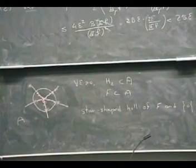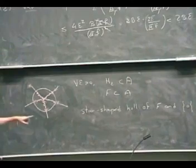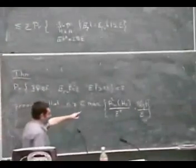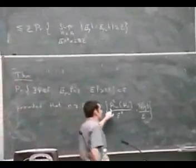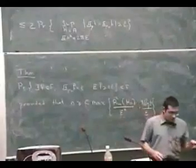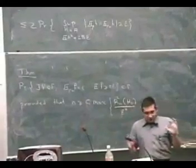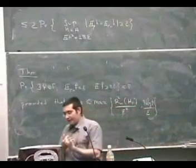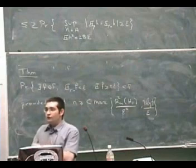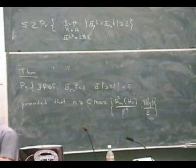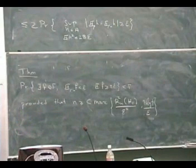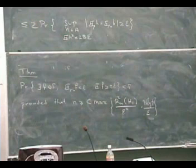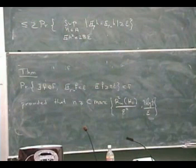What I mean by global data is: assume that you know something about the structure of your original class — assume that you know, for example, it's a class constructed using kernel machines, or assume that you know something about the covering numbers. Can you say something about the Rademacher complexities associated with this? That's the first thing.